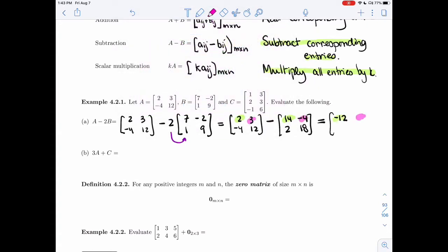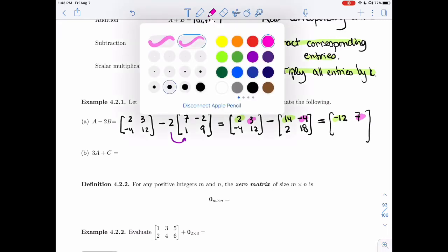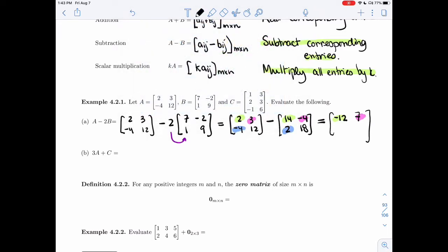Then 3 and minus 4, I'm going to put over here. So 3 minus minus 4, that's 7. And then minus 4 and 2. So minus 4 minus 2 is minus 6.